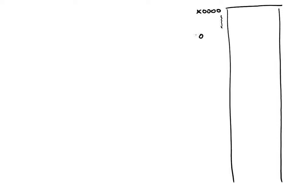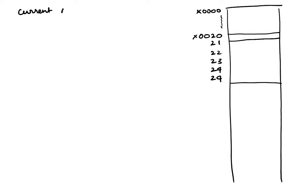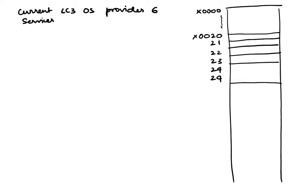In the operating system region, which starts at 0x0000, there is a location on LC3 starting at 0x0020 and going up through 0x0021, 0x0022, 0x0023, 0x0024, and 0x0025. The current LC3 OS provides six services.